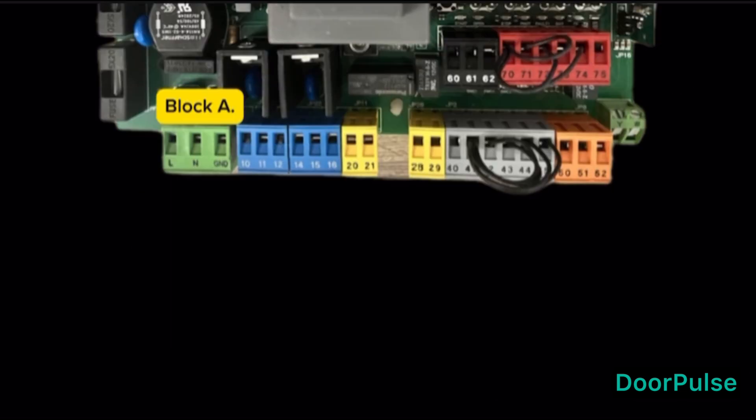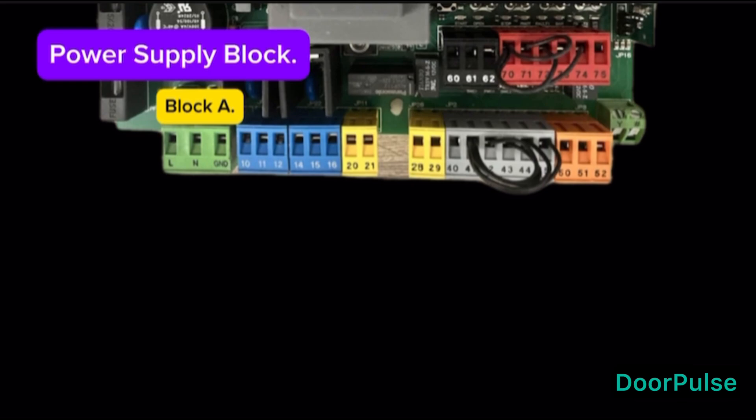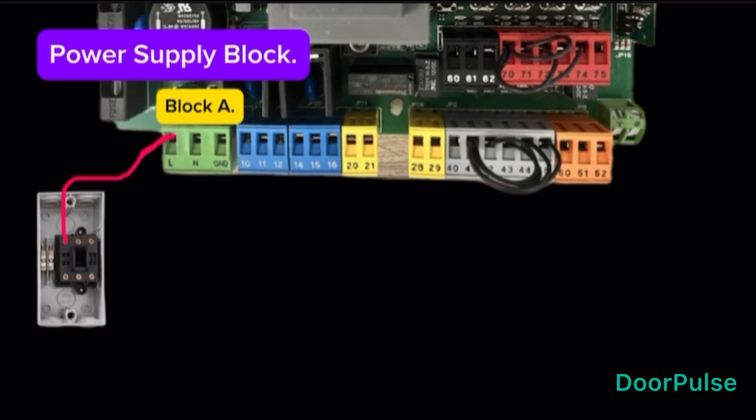Block A, Power Supply Block, three terminals block. Terminal L is line main power supply. Terminal N is neutral main power supply. Terminal G is main ground safety purpose.